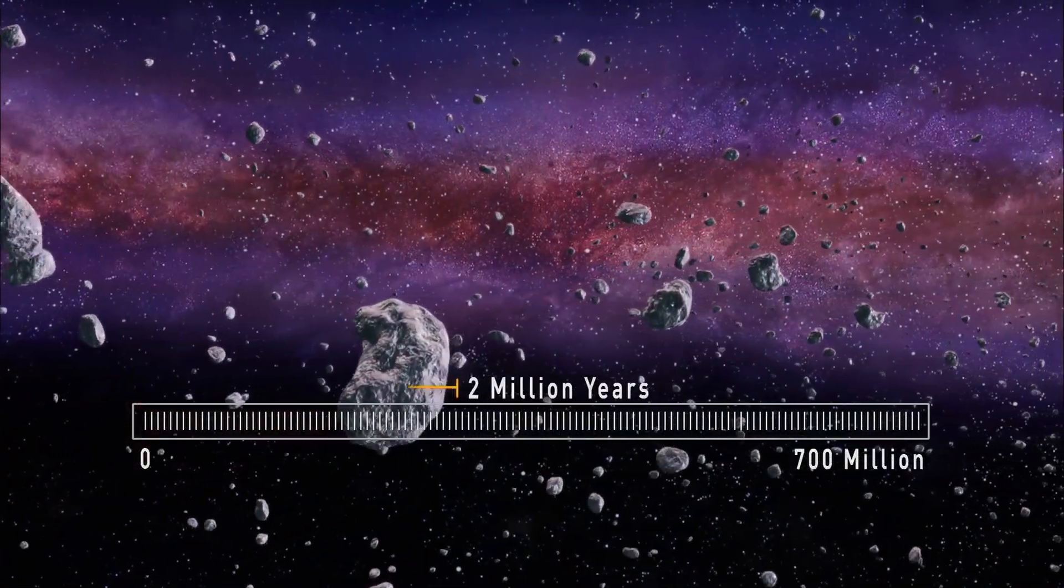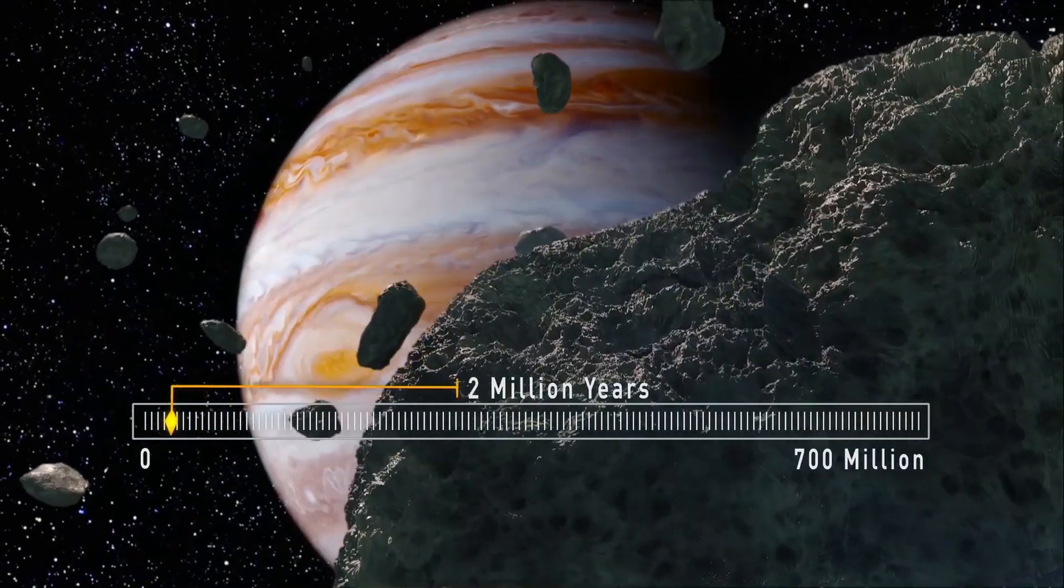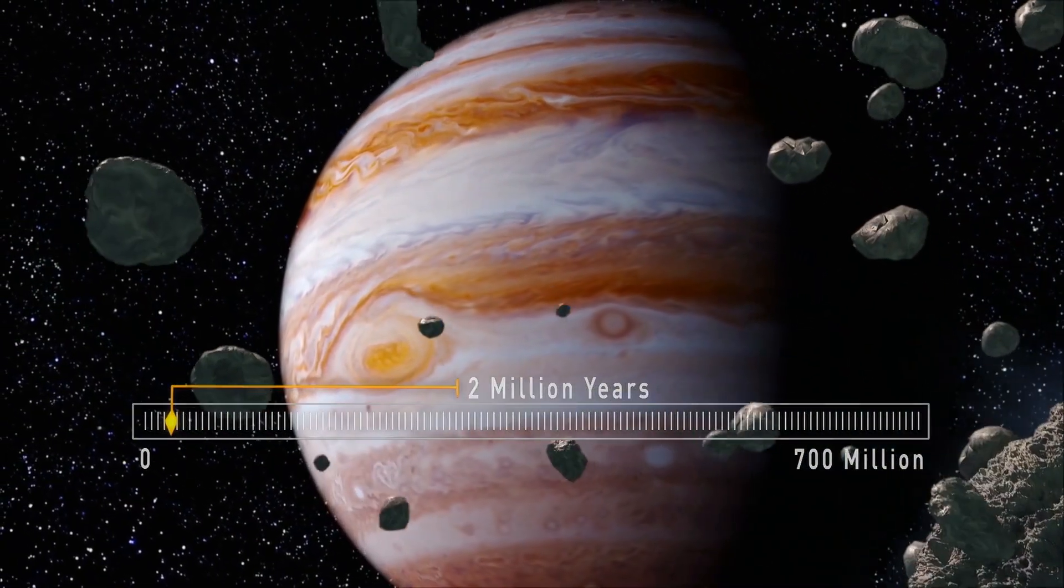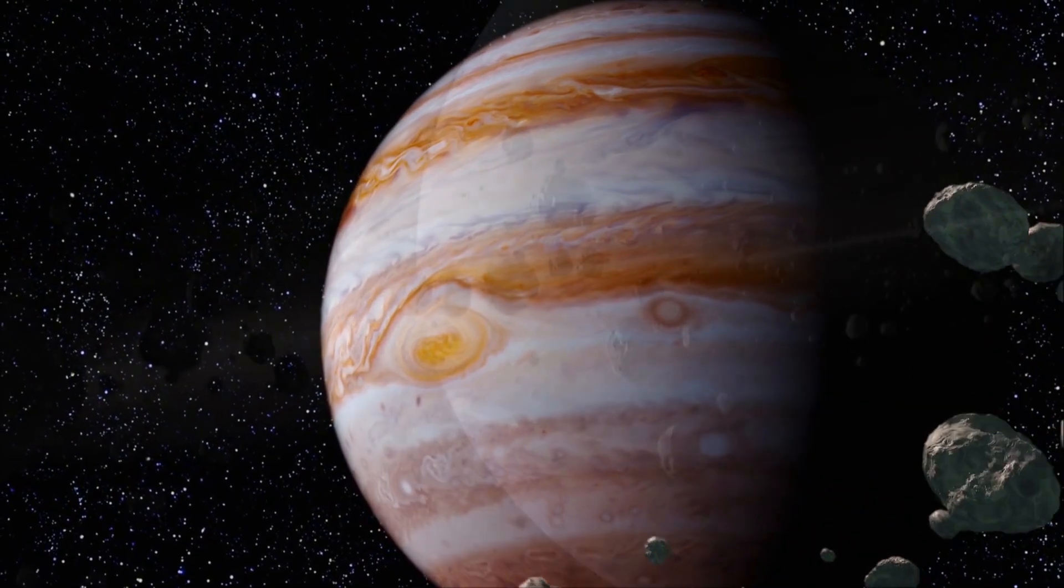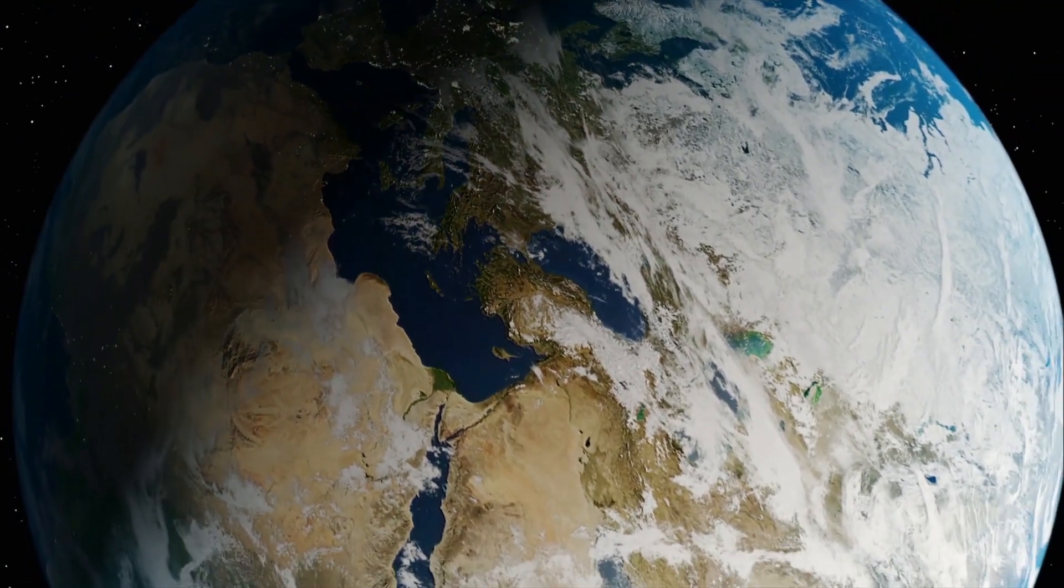Now, just 2 million years after its birth, the young system takes its first steps in creating a family of planets that one day will be as diverse as Jupiter, Saturn, or the Earth.